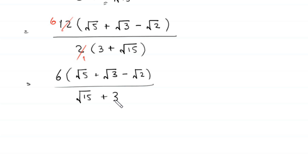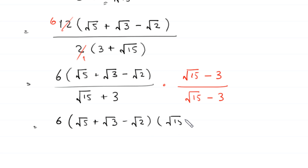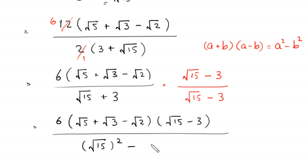To rationalize this denominator we multiply and divide by the conjugate of root 15 plus 3, which is root 15 minus 3. In the numerator we multiply the expression by root 15 minus 3. In the denominator, using the identity a plus b times a minus b equals a squared minus b squared, root 15 plus 3 times root 15 minus 3 becomes root 15 squared minus 3 squared.